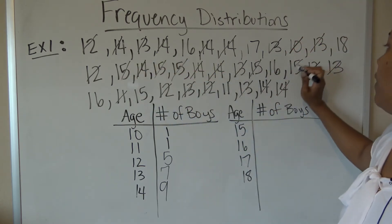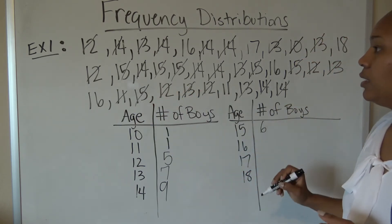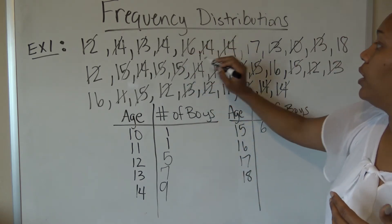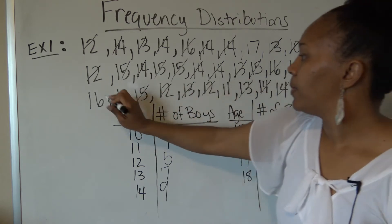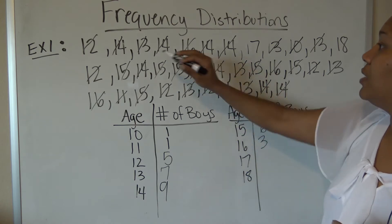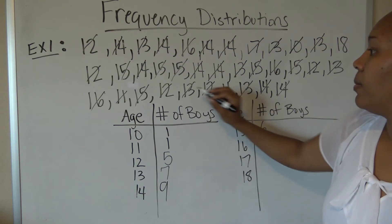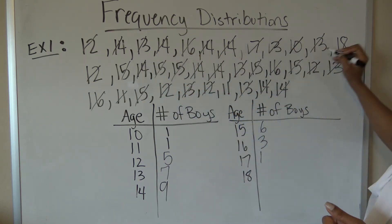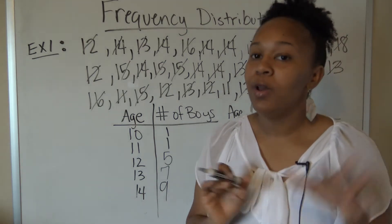Now looking for 15s: none in the top row, then 1, 2, 3, 4, 5, 6 — so there are 6 fifteens. Now looking for 16s: I count 3 sixteens. And for 17s and 18s, there is 1 each.